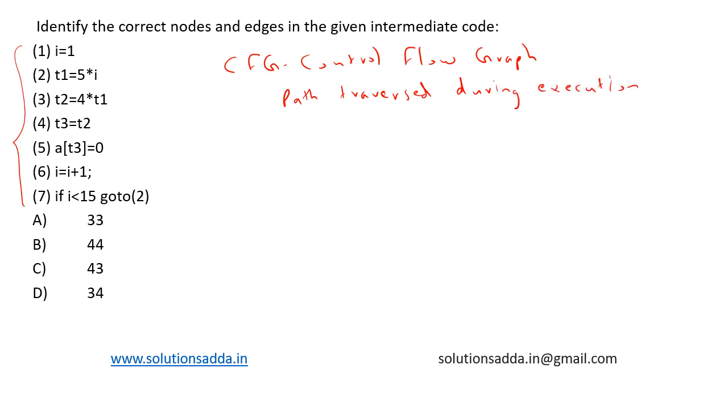That is control flow graph. There is an explicit start and end nodes—these are the two important properties. For initialization we have a separate node—that is also another property. Now let's draw the control flow graph.